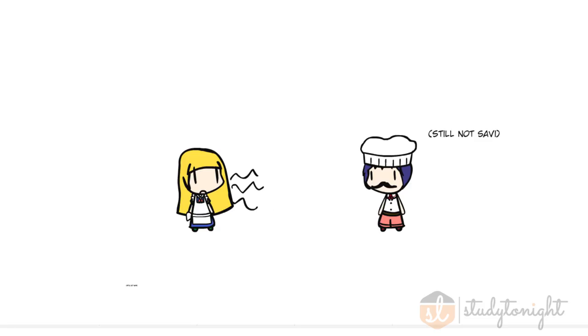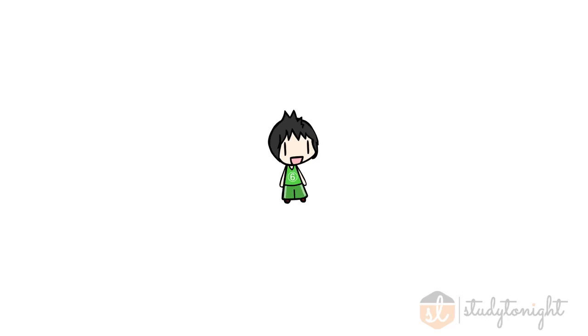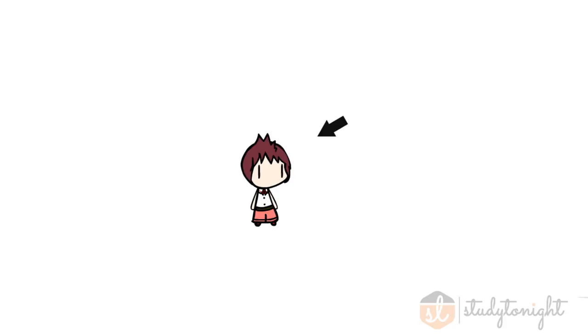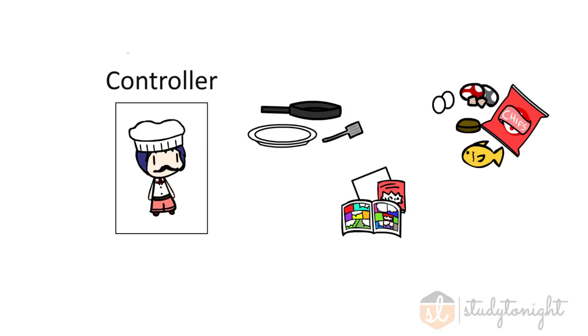From a computer engineer's point of view, things become a bit different. You, as the customer who walks into the restaurant, are what's called the end user. When you sit down at the table and give your order, you're sending a request. The controller is the chef here, who receives and processes your request.